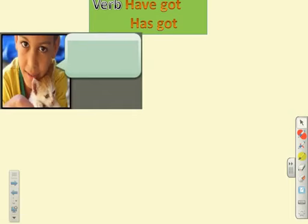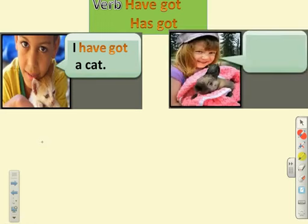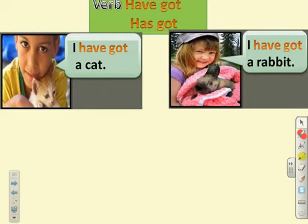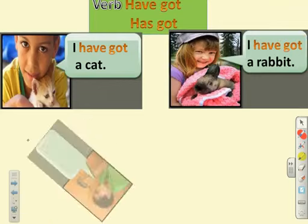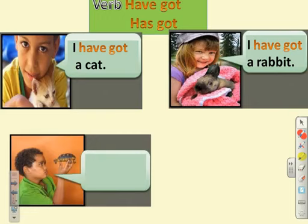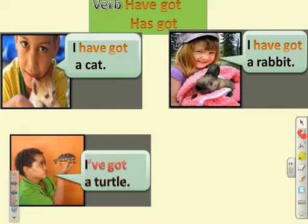Look at the first picture. Have you got a cat? Yes, I have got a cat. Picture two: have you got a rabbit? Yes, I have got a rabbit. Picture three: have you got a turtle? Sure, I have got a turtle. Note that 'I'm' is the short form of 'I have got.'